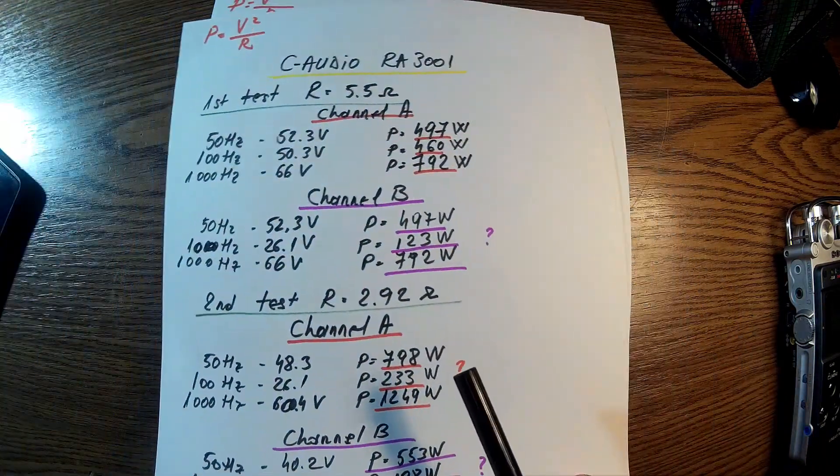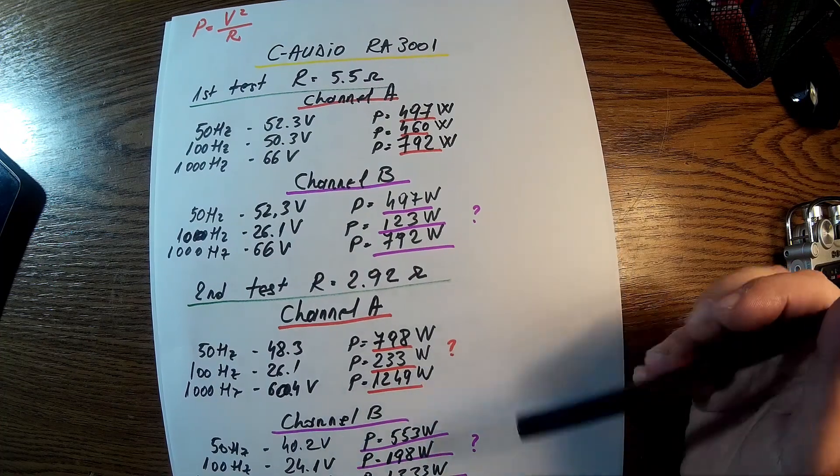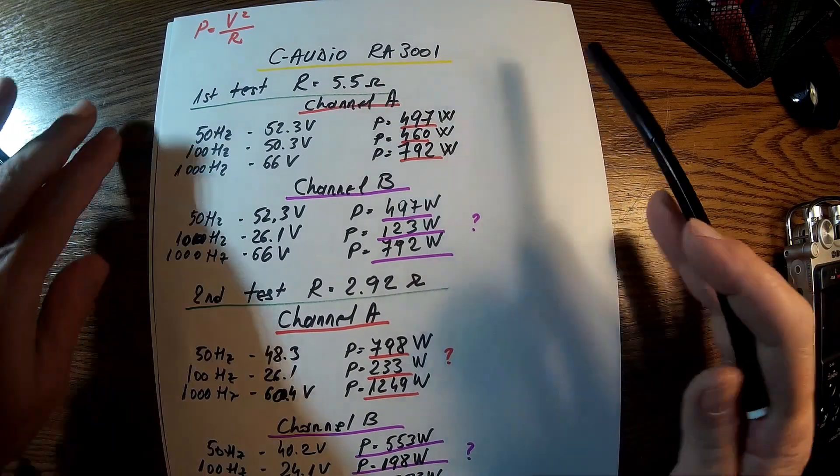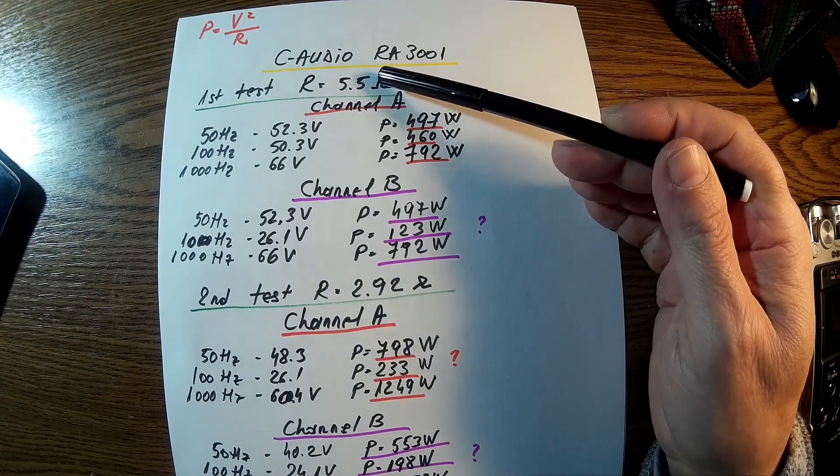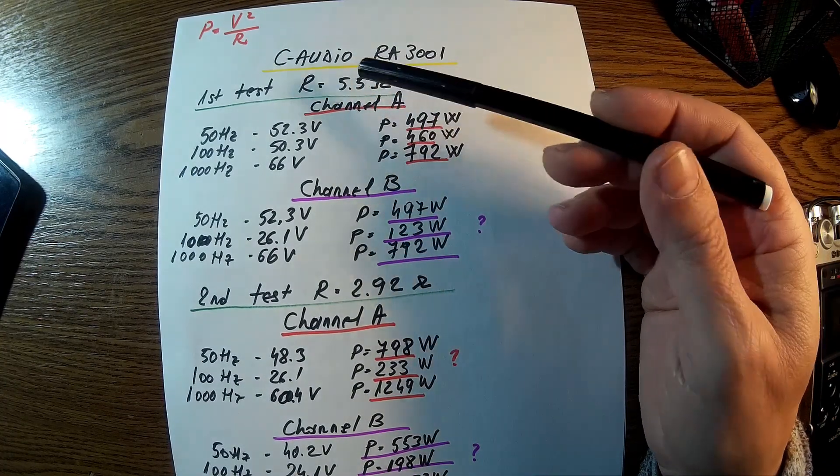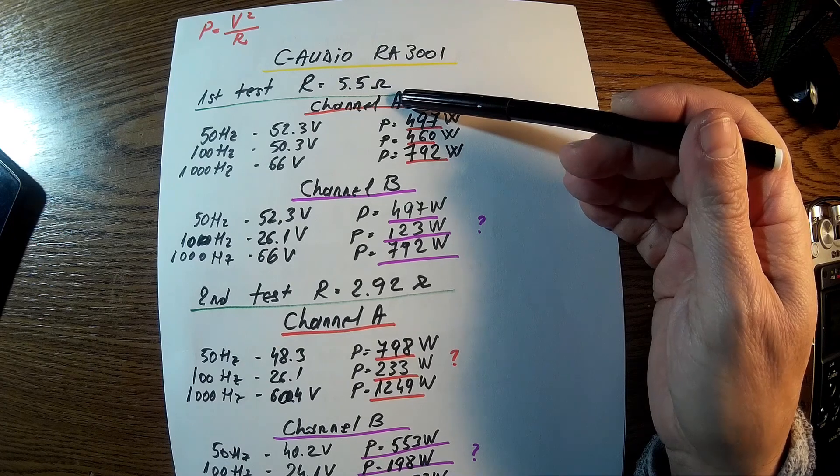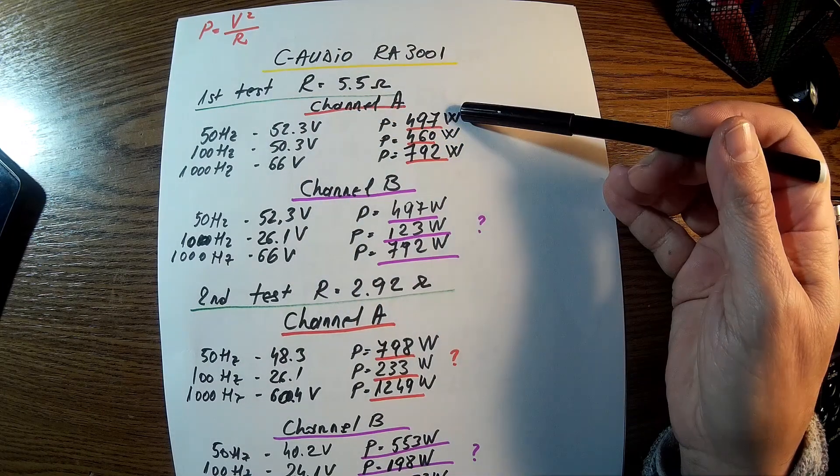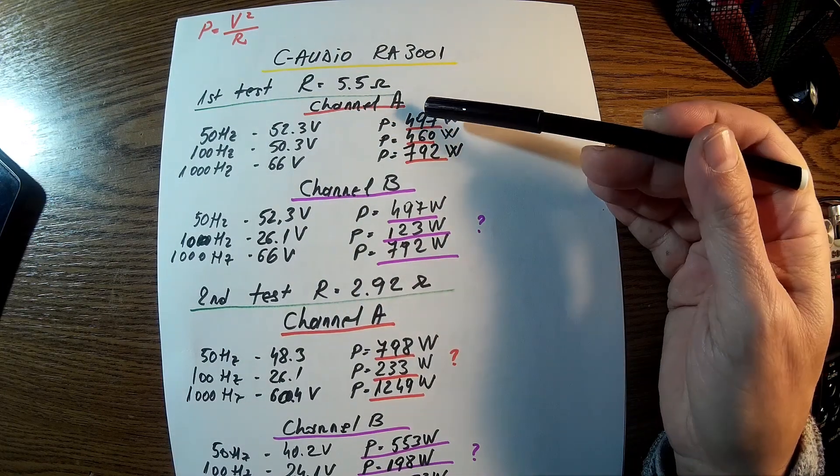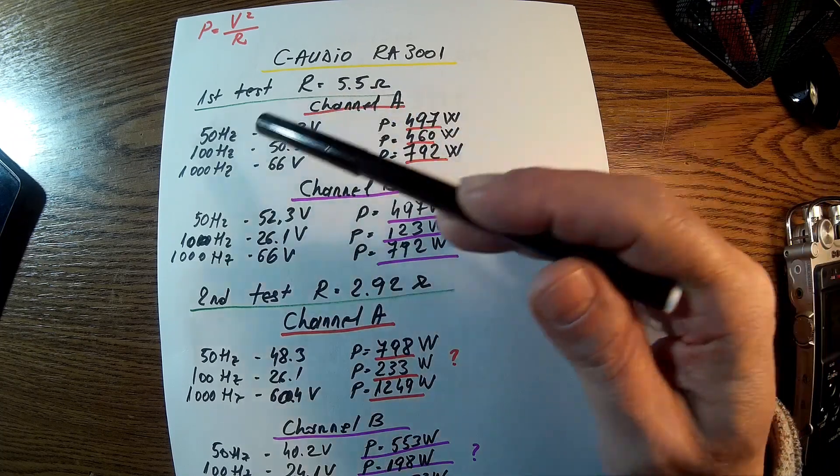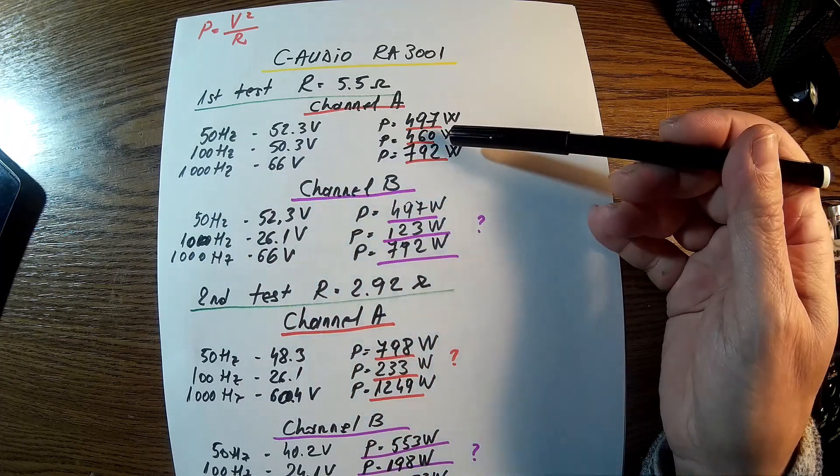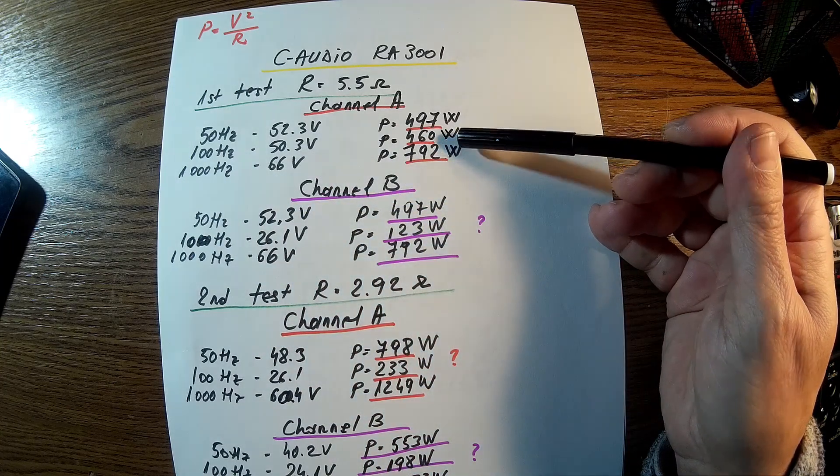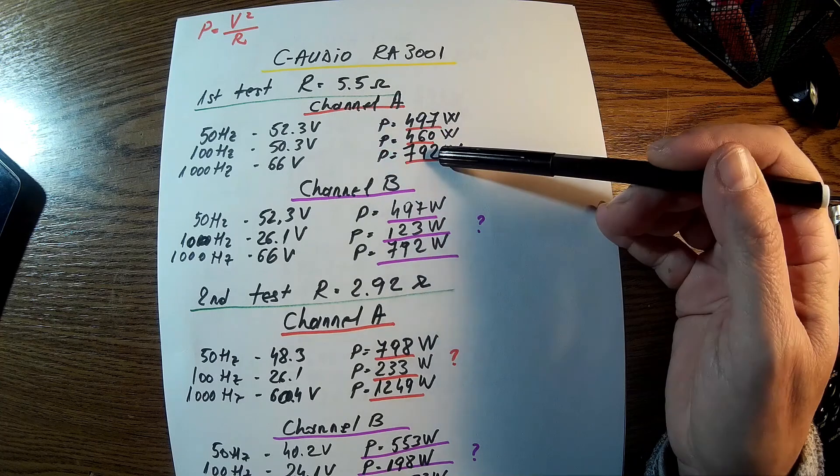C-Audio. Of course, this is a smaller amplifier but interesting results too. 5.5 ohms load. Channel A, Channel B. We have 50 Hz, almost 500 watts. 100 Hz, 460 watts. 1000, 792 watts. Pretty good.